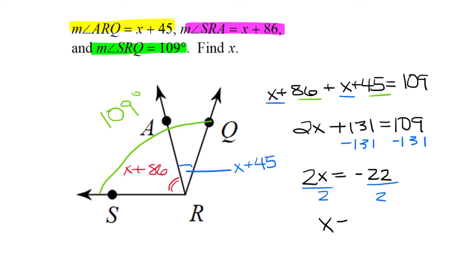After the algebra, x equals negative 11. Does that make sense? Well, we're just solving for x. Substitute negative 11 into both smaller angles. 75 and 34 equals 109. The negative 11 for x works.